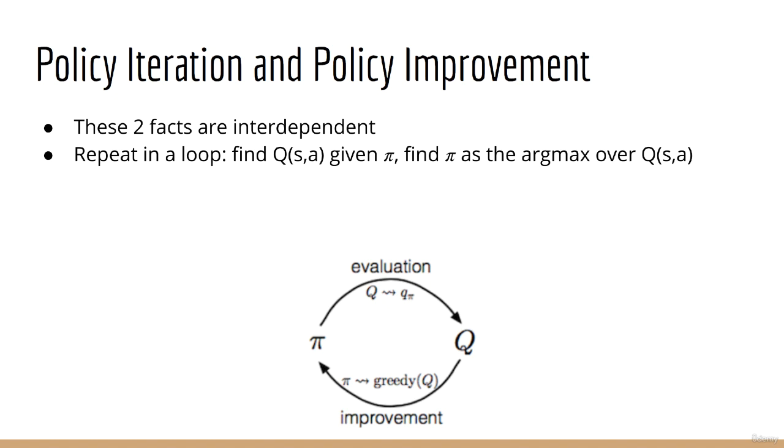You can see that we have named these two steps. The act of finding the value function is called the evaluation step, and the act of finding the best policy given that value function is called the improvement step. And just to be clear, the reason why this is a loop is because they both change each other. So by doing step one, you change the policy, and by doing step two, you change the value.